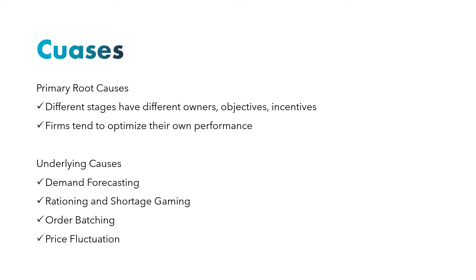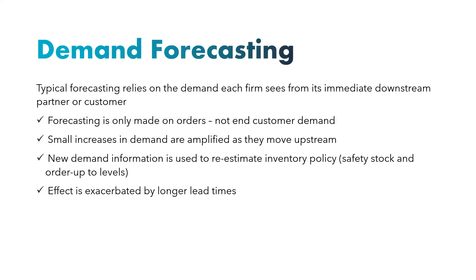In this video we are going to discuss in detail two causes of the bullwhip effect: demand forecasting and rationing and shortage gaming. Now, discussing the first cause — demand forecasting — each stage of the supply chain does forecasting based on orders from its immediate downstream stage, not from the end customers.